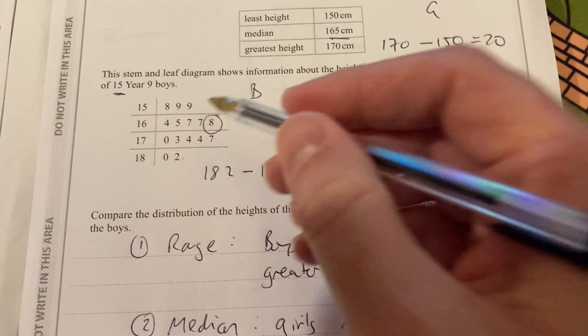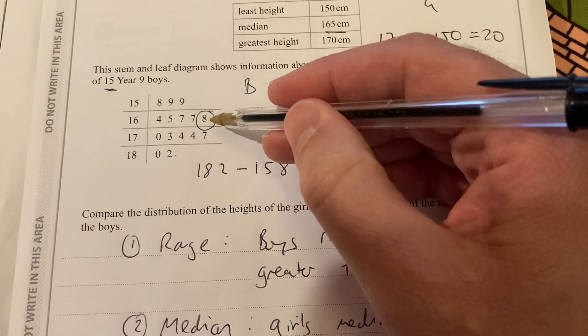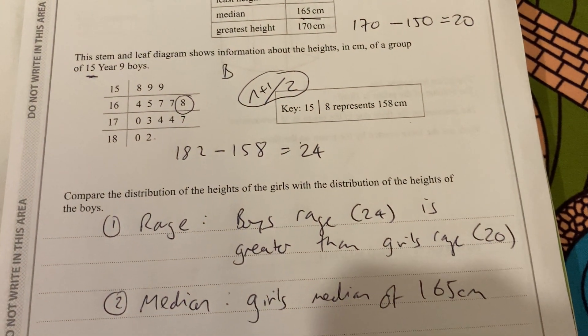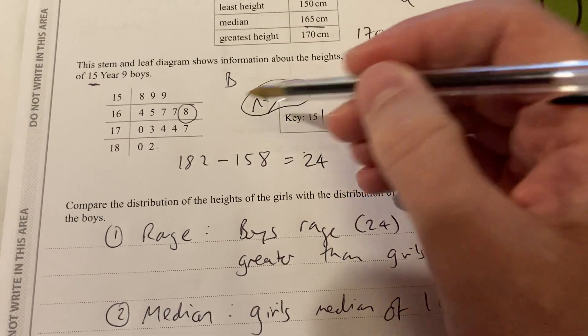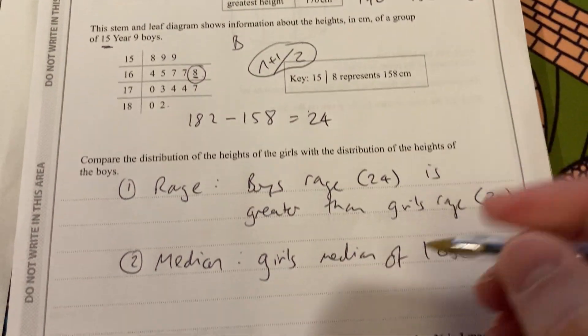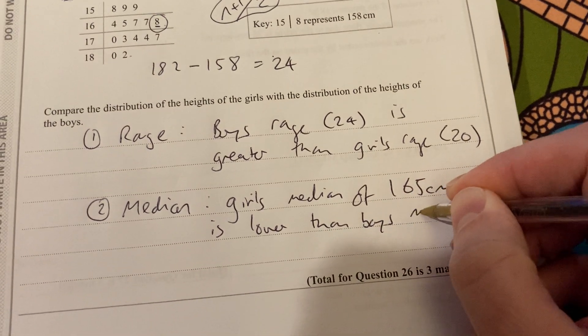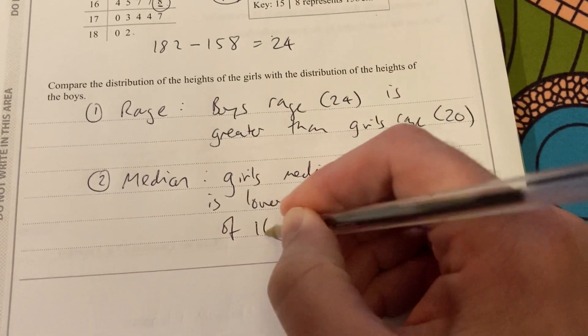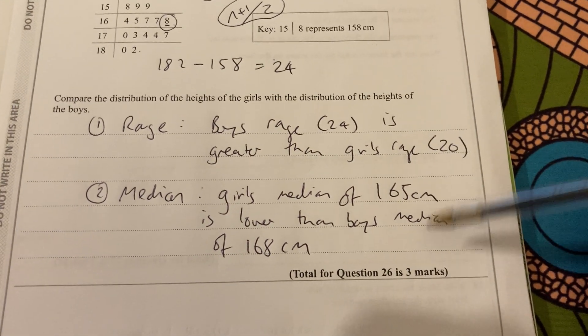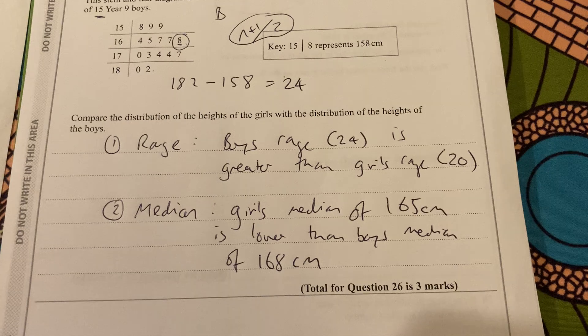That's the 8th term. And just compare this. 1, 2, 3, 4, 5, 6, 7. So, you know, it's 7. And then that's the 8th. And then 7 more gets you to 15. Because it's n plus 1 over 2 gets you the median term. So 15 plus 1 is 16. Divided by 2 is the 8th term. Happens to be an 8 there. But that's just coincidence. It's 168. So that is lower than the boys' median of 168 centimeters. Okay. So three marks for taking two data points and comparing both the range and the median. Okay. That's a nice three mark question.